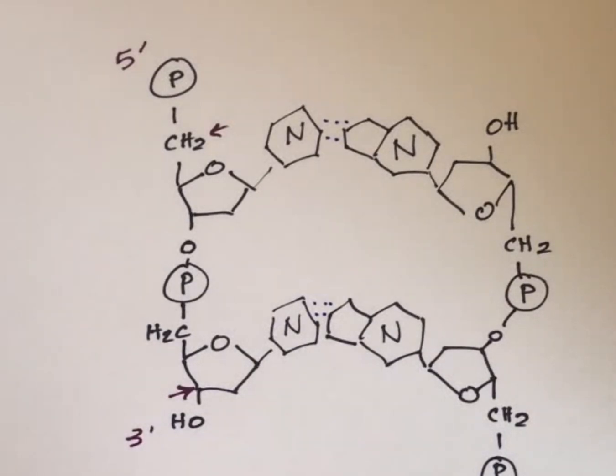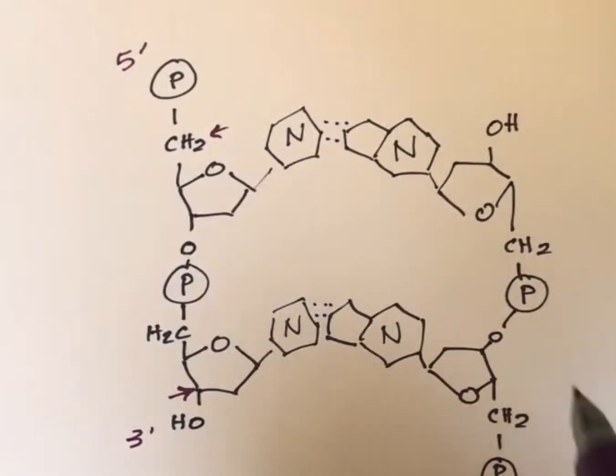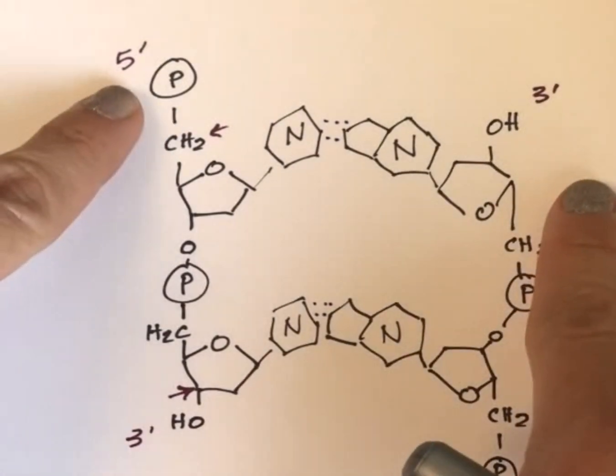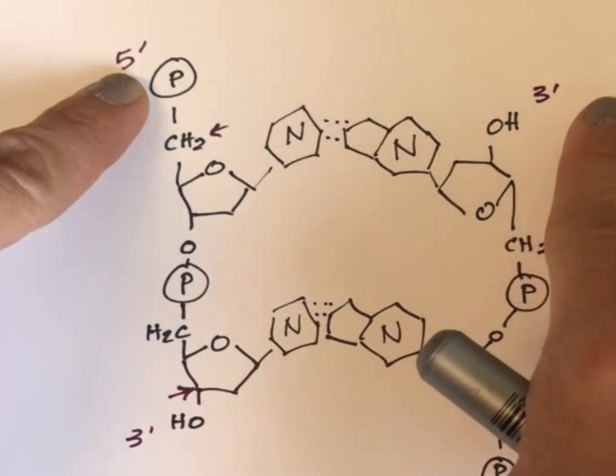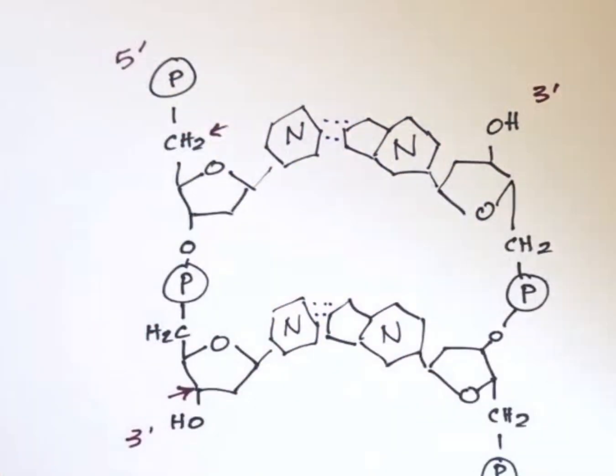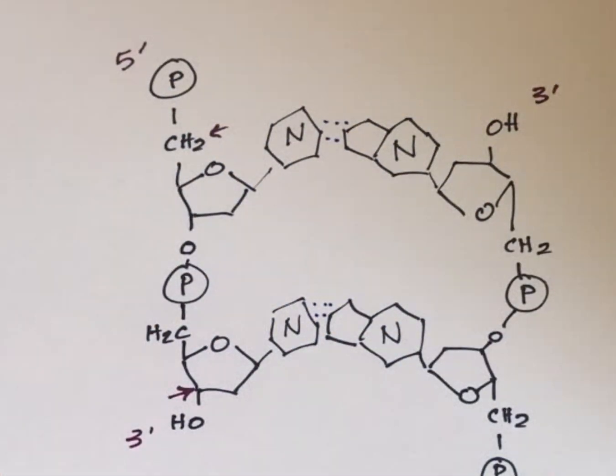So this is going to be the five prime end, and this is going to be the three prime end. So note that these are anti-parallel. The five prime end is on the same end for this strand as the three prime end is for this strand. So that's what we mean when we say that DNA is anti-parallel in its double-stranded form. Bye.